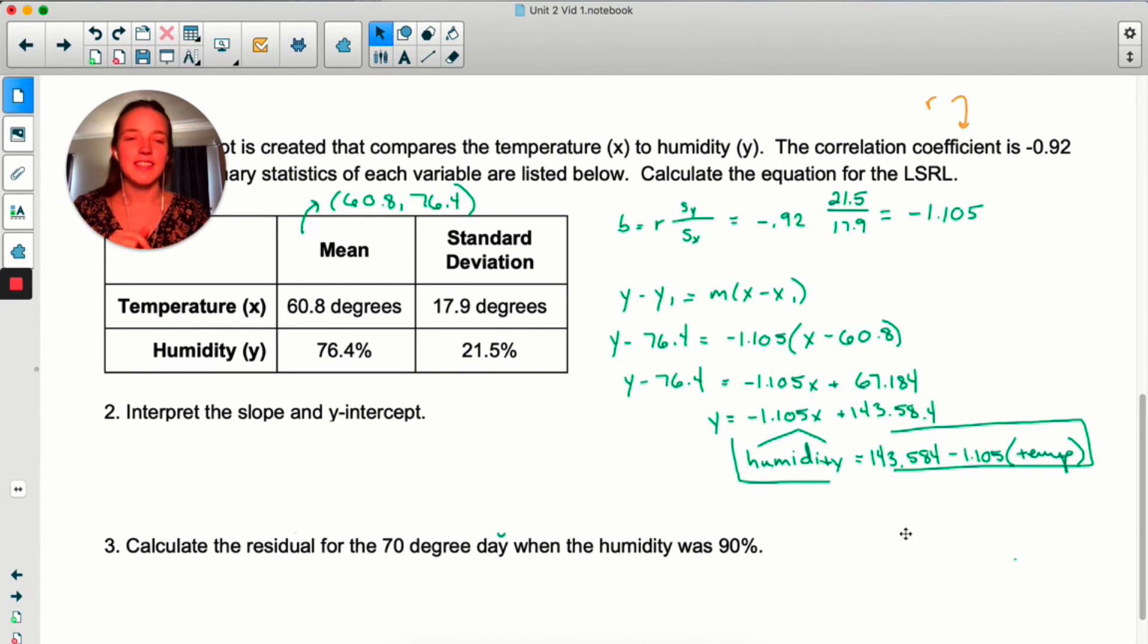Now, one thing that I do in statistics is instead of just writing x and y, I like to replace those letters with the actual variable. So, I'm calling this humidity instead of y, and you'll notice I did the hat because this is predicted humidity. And then instead of x, I called it temp. If you don't do that, if you prefer using x and y, that's fine, but somewhere else you need to write x equals temperature, y equals humidity. And once again, that's a college board thing. They want to see context in every single problem. You'll also notice I did this in the order that I wrote at the beginning. It's not a big deal, but usually in statistics, it's y-intercept and then slope.